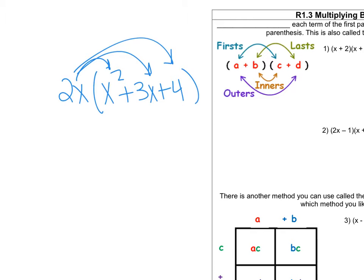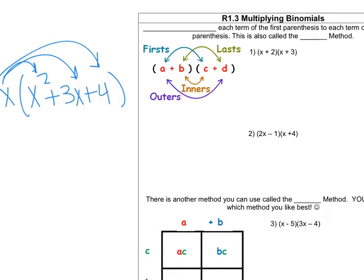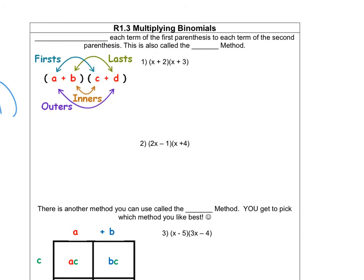But today we're going to start multiplying a binomial times a binomial. We are going to multiply each term of the first parentheses to each term of the second parentheses. This is also called the FOIL method.